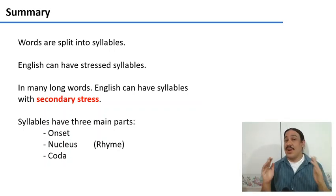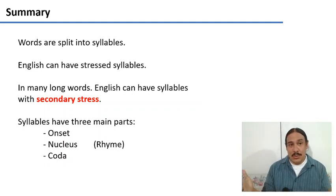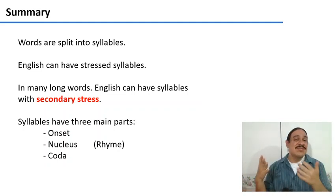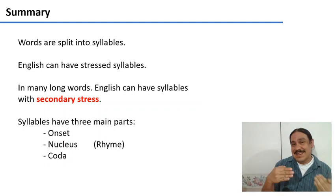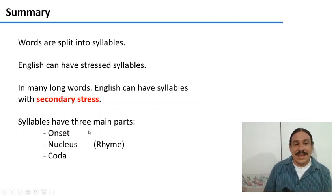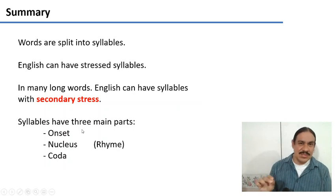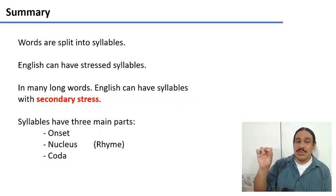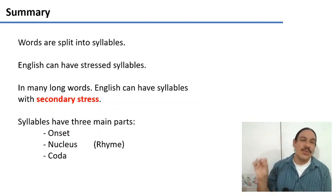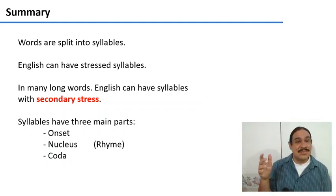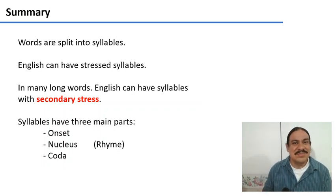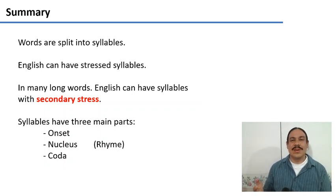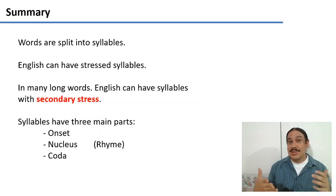So in summary, words are split into syllables, as you've known from school. And English does have stressed syllables. It also has secondary stress. But here we looked at the subcomponents of syllables. Syllables have onsets, and they have rhymes which are composed of nuclei and codas. And we know these are real because we see them in speech errors, for example. In the next video, we will look at how languages build their syllables.